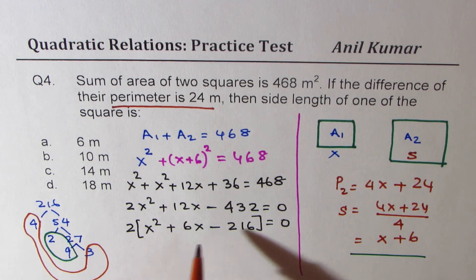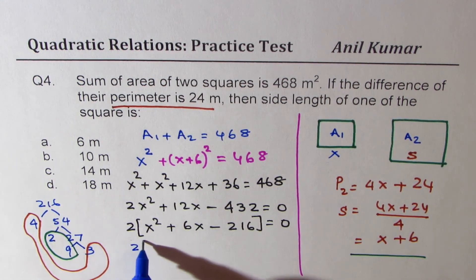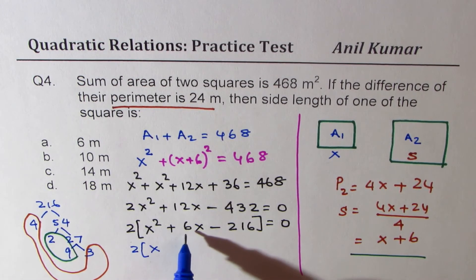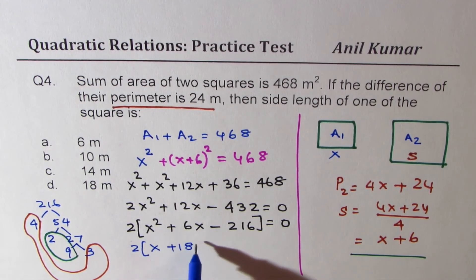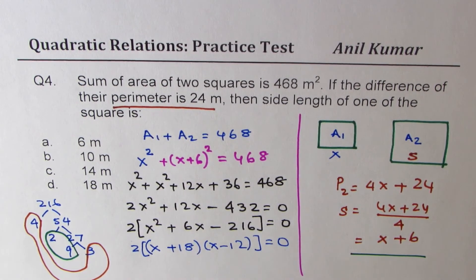So 12 and 18 works for us. So their difference is 6. So we could write this as 2 times x since we need bigger number to be positive, plus 18 times x minus 12 equals to 0.